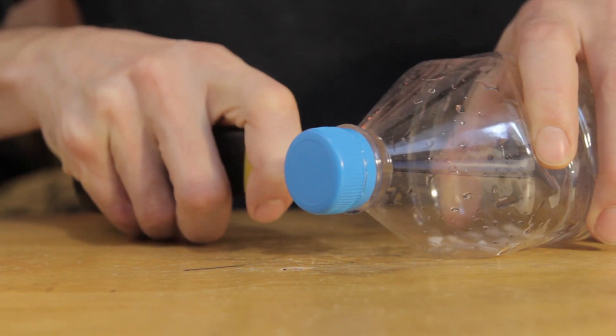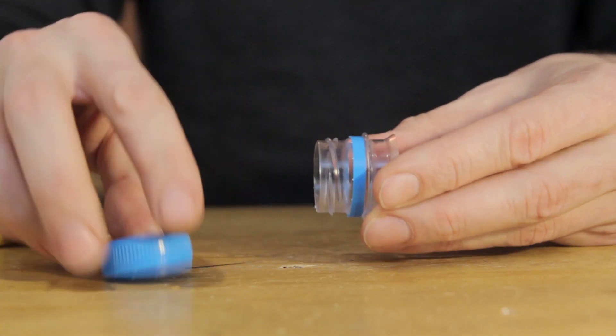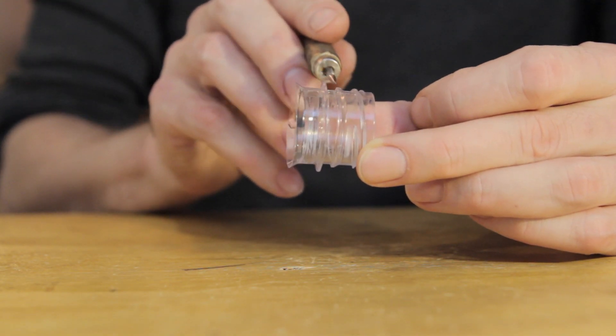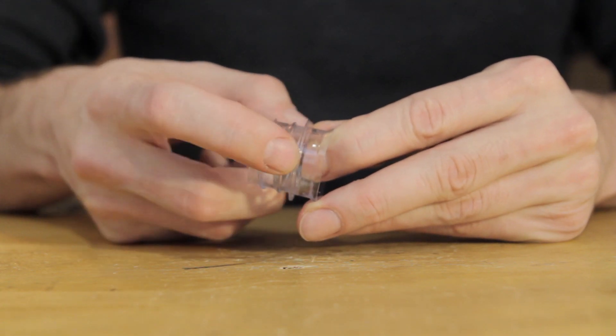We're going to cut off the top of the water bottle, leaving a little bit of the slanted part. Then we'll make a small hole on the side between this edge here and the threads for the lid. That's for the air pressure to escape through, so that we can blow continuously.